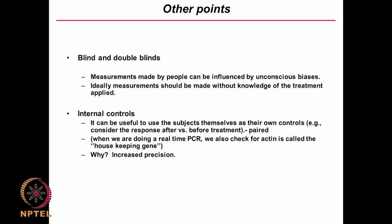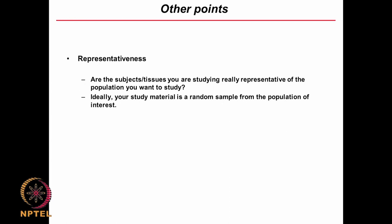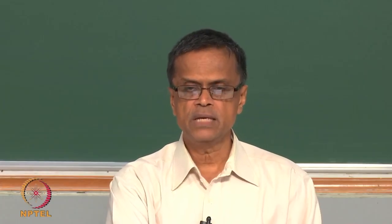In many situations we use internal controls — especially in molecular biology, biochemistry, product purification, chromatography, and so on. Representativeness is very important, especially in clinical trials. The subjects you take as volunteers should represent the entire population rather than one stratum of society. The tissue samples you take should also be representative of the population. You should study the material in a random population of interest rather than being specific to one group of people — that is very dangerous.